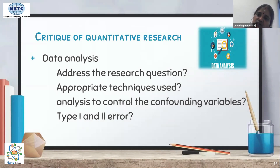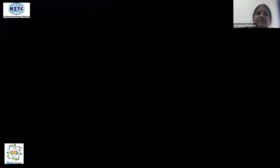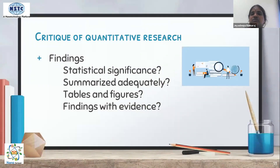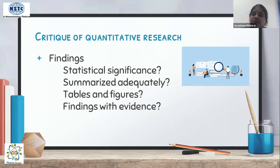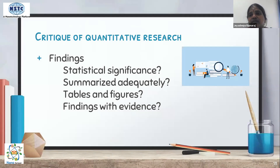Then go to the findings. Check whether the statistical significance of the findings is explained in the paper, whether they are summarized adequately, whether tables and figures are clear and easy to understand, and whether each of the findings is supported by evidence. These are all the things you need to assess in the findings section.